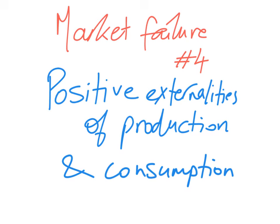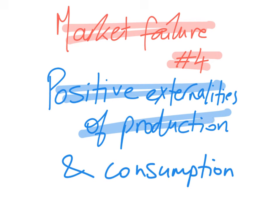This is the fourth of the market failure series. In this video, we will cover positive externalities of production and consumption. I'm going to define and explain the concept of positive externalities in production and consumption, define and explain the concept of merit goods, and use diagrams to show positive externalities of production and consumption as well as government ways to correct this type of market failure.